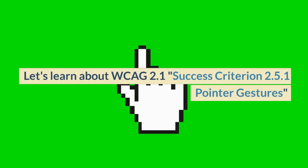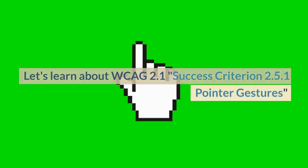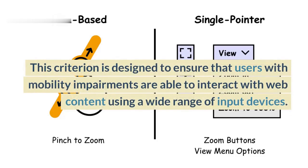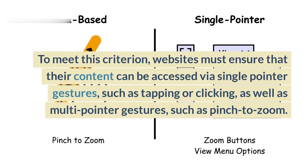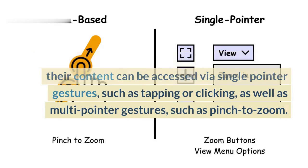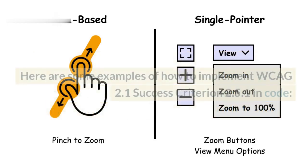Let's learn about WCAG 2.1 Success Criterion 2.5.1 Pointer Gestures. This criterion is designed to ensure that users with mobility impairments are able to interact with web content using a wide range of input devices. To meet this criterion, websites must ensure that their content can be accessed via single-pointer gestures, such as tapping or clicking, as well as multi-pointer gestures, such as pinch to zoom.